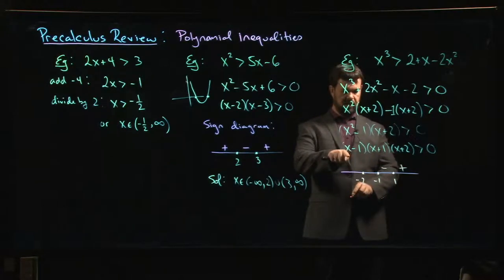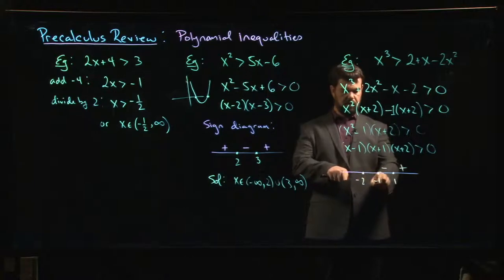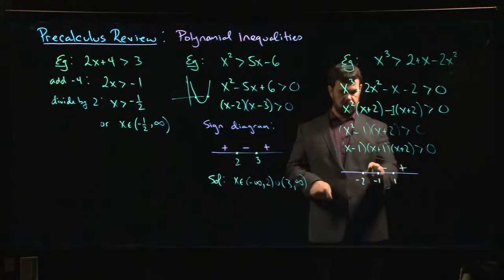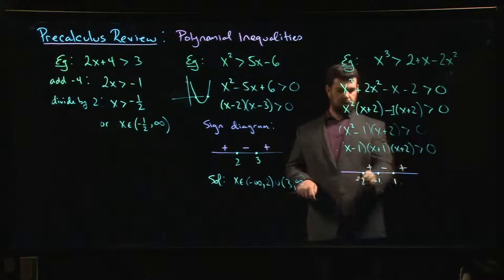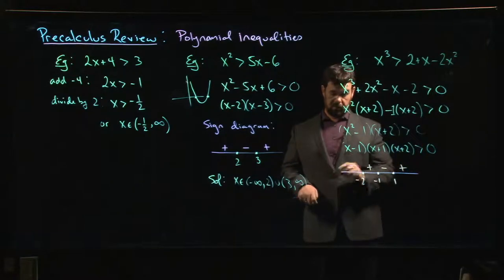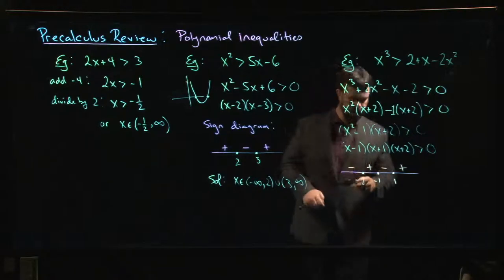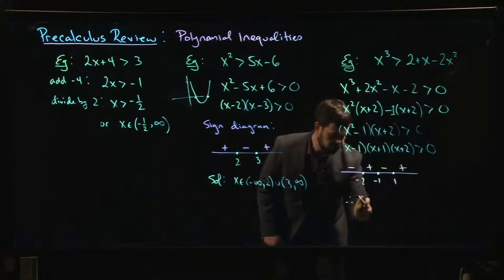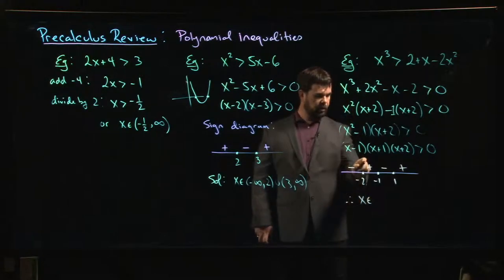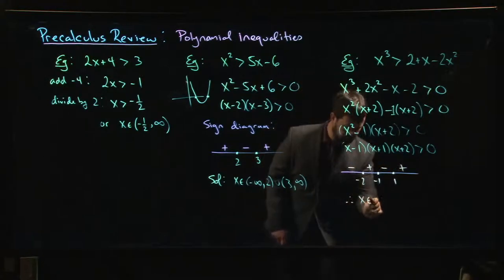One minus sign means the whole thing is negative. Between minus 2 and minus 1, now this factor and this factor are both negative, that one's positive. Two negatives gives me a positive. Then finally, once we're less than minus 2, all three factors are negative. Three minus signs gives me an overall negative. Positive, negative, positive, negative. That means that if I want this thing to be positive, I look for the intervals with the plus signs.